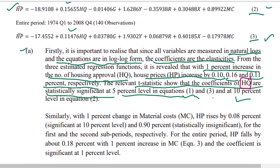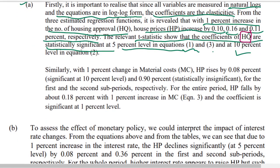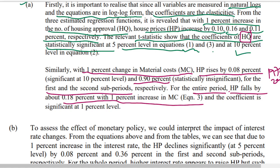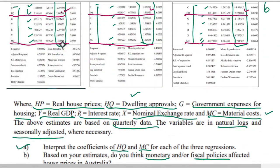For material costs (MC): with a one percent change in material cost, HP rises by 0.08 percent and 0.90 percent for the first and second sub-periods respectively. For the entire period 1974 to 2008, HP falls by 0.18 percent with a one percent increase in material cost. These coefficient values come directly from the MC row in the regression results.